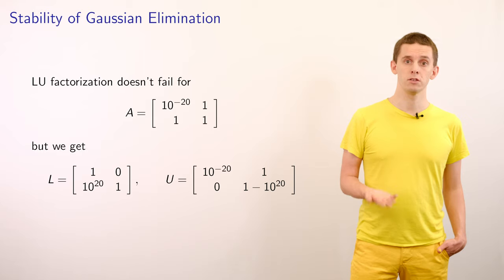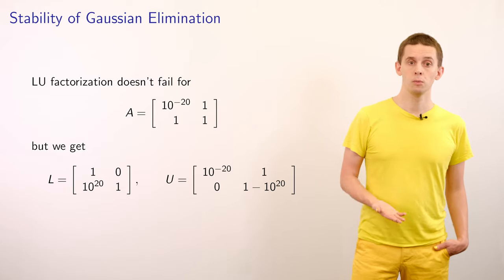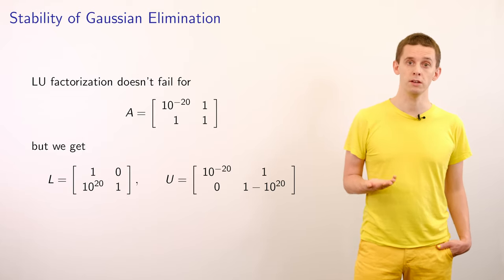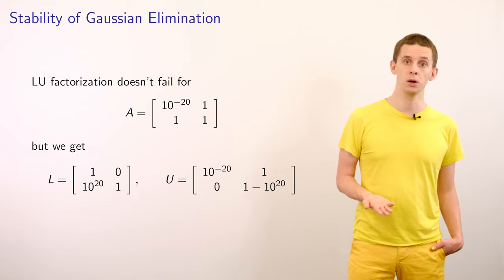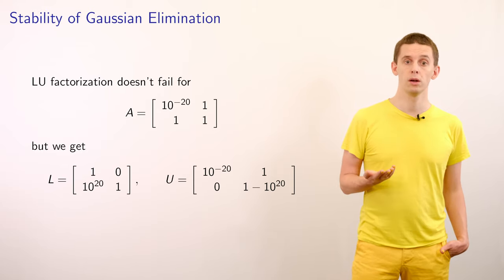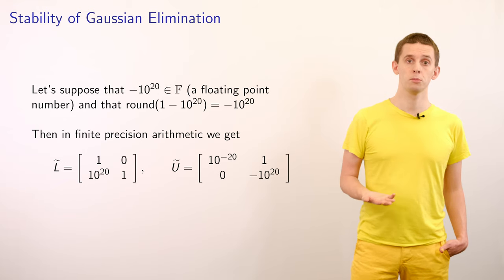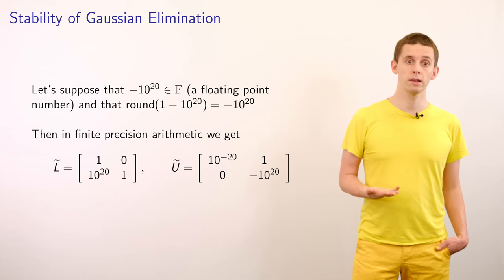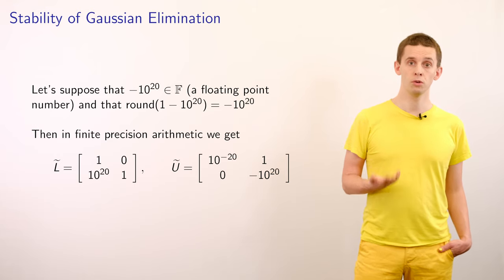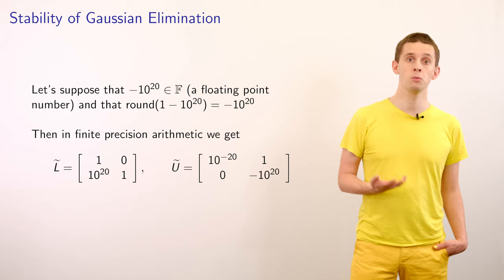It's worth looking at a slightly perturbed problem. Let's look at the case where A has entries 10^-20, 1, 1, 1. If we apply our LU factorization now, we'd get a valid result: L with entries 1, 0, 10^21, 1, and U with entries 10^-20, 1, 0, 1 minus 10^20. Working in double precision, where machine epsilon is around 10^-16, the number 1 minus 10^20 is not representable in finite precision, and we'd likely just get rounded to minus 10^20.